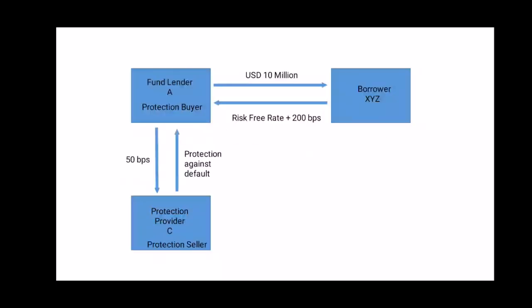The premium paid by A is part of the extra return earned by investing in the risky bond over the risk-free bond — it is part of that 200 basis points. 50 basis points are given to the protection provider, so the net return available to the investor is 150 basis points over and above the risk-free rate. Let us now understand the transactions in different scenarios.